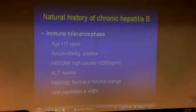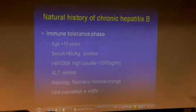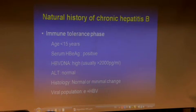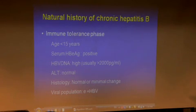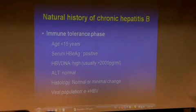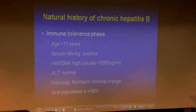The immune tolerance phase occurs from about age 0 to 15. The e-antigen is always positive, the DNA is usually very high, liver function test is normal, and histology shows normal or minimal changes. We do not treat these patients — even though the DNA is very high, treating them is a waste of time. We leave them alone unless they have liver cirrhosis or active hepatitis.